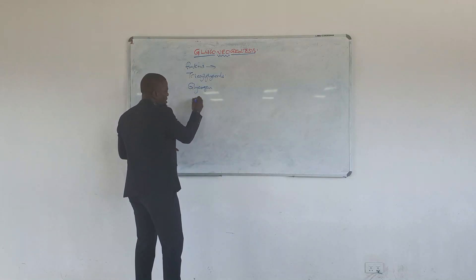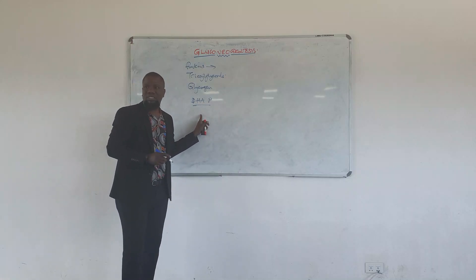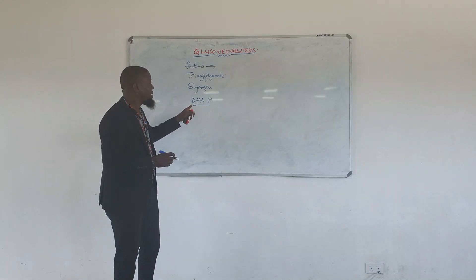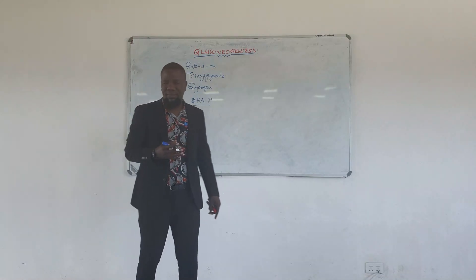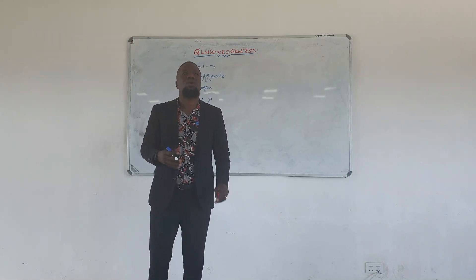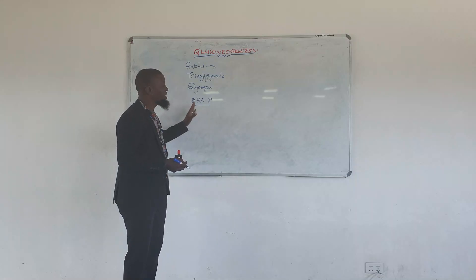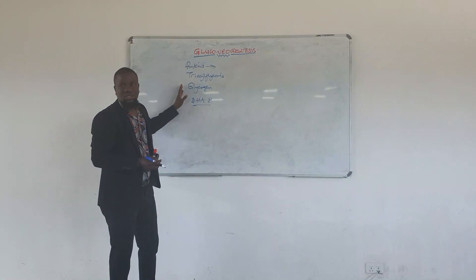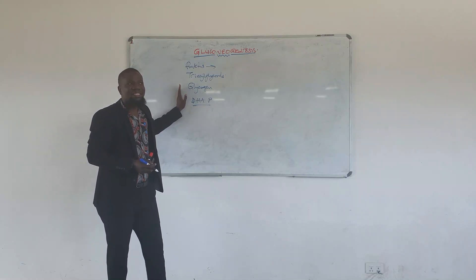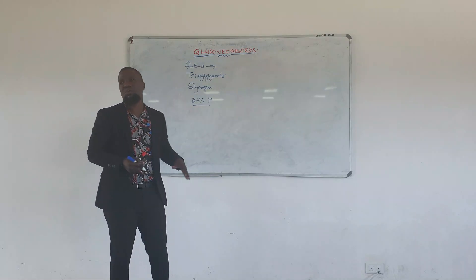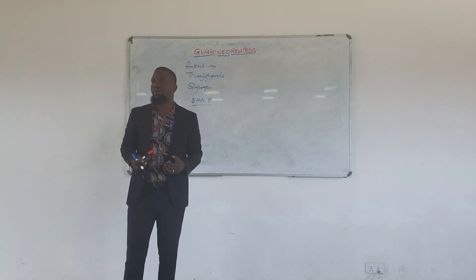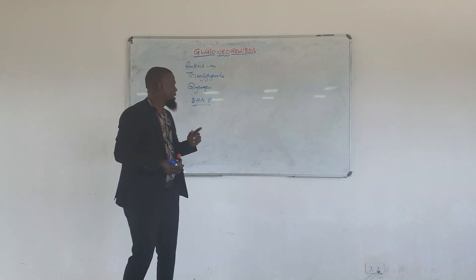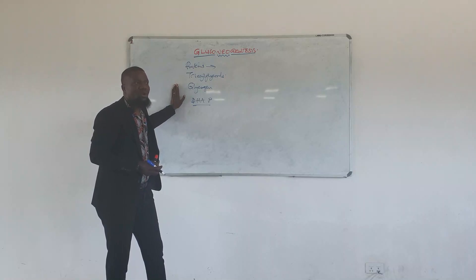If you produce glucose from intermediates of glycolysis, such as lactate, is that gluconeogenesis? Yes, exactly. One important point: gluconeogenesis is only gluconeogenesis once the whole process has completed and free glucose is produced. In most cells, something like the reverse of glycolysis could happen but end at glucose-6-phosphate without actual production of free glucose — this in itself is not gluconeogenesis.